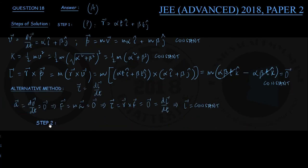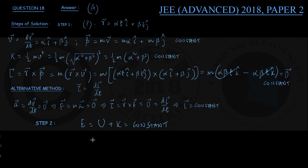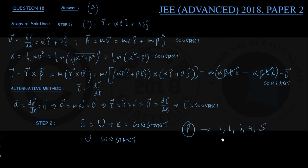For a system on which only conservative forces act, total mechanical energy E — the sum of potential energy U and kinetic energy K — must remain constant. Since for motion P we have already established that kinetic energy K is constant, it follows that potential energy U is also constant or conserved. So for motion P from list 1, all 5 elements of list 2 remain constant.